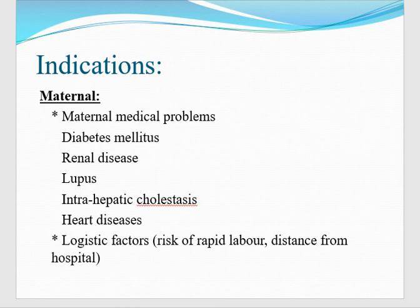Now, what are the indications? Indications can be classified as maternal indications and fetal indications. Maternal indications include maternal medical problems like diabetes mellitus — if it is uncontrolled and the patient is full term at 38 weeks, we have to deliver because there is more chance of intrauterine death. Then renal disease, which will aggravate with passage of time. Also lupus disease, intrahepatic cholestasis, and heart disease.